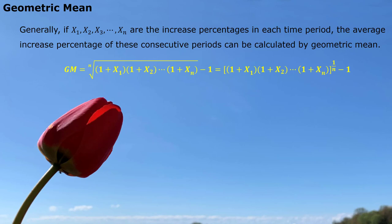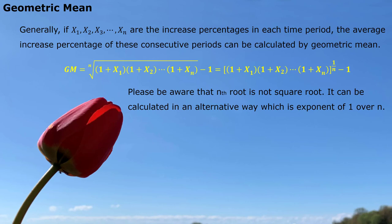We have 1 plus x1, 1 plus x2 until 1 plus xn. They all multiply together, and then we do nth root. At the end, subtract 1. The nth root can also be expressed by exponent 1 over n. So the formula, we have two alternative ways. Be aware the nth root is not square root.